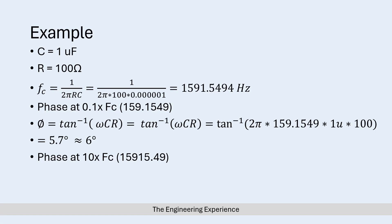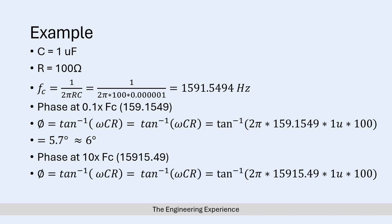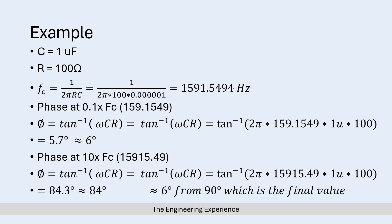Next, calculating the phase response at 10 times the cutoff frequency — 15,915 Hz — plugging in the same numbers but changing the frequency, we end up with a phase response of approximately 84 degrees, which is 6 degrees from the 90 degree asymptotic final value. This answers the question, but there is a simpler method provided in the book, so let's go through that as well.